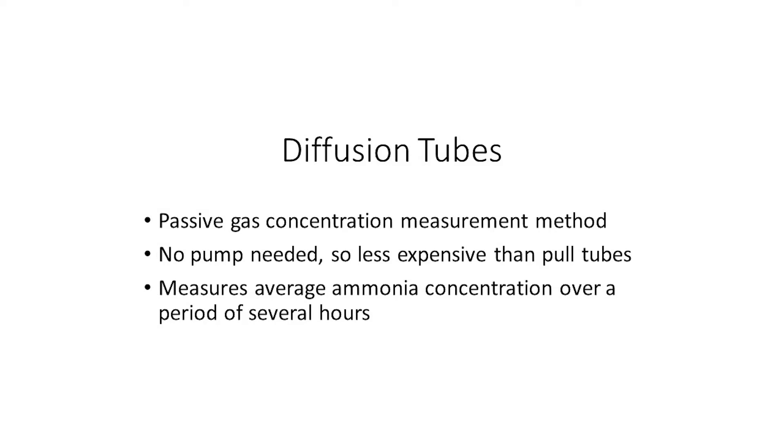Diffusion tubes, also known as passive tubes or dosimeter tubes, offer an even less expensive colorimetric option to monitor ammonia gas in the animal environment since a pump is not needed.